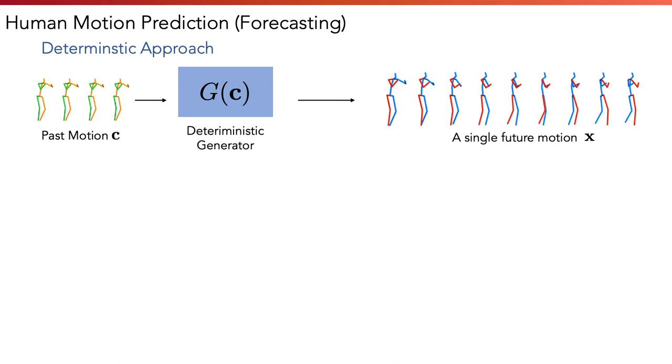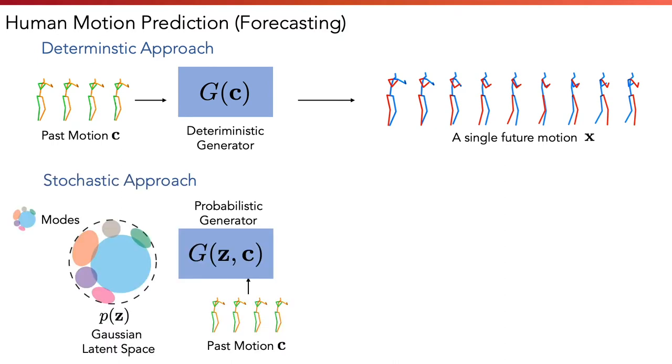This limitation motivates the second approach, that models stochasticity in the future motion, which is also the approach we use in the paper. This approach learns a generative model where each mode of the future motion is represented in a Gaussian latent space, as illustrated here by different colored areas.